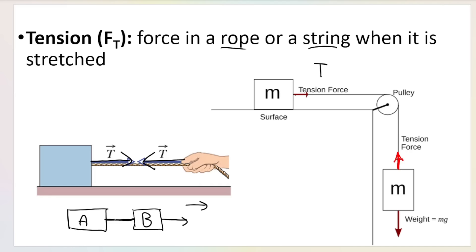When we have a rope connecting two objects, consider object A and object B connected by a string. There's a tension force pulling A to the right and a tension force pulling B to the left. Someone is pulling the rope to the right — that rope is what's causing A to move right, so tension for A goes to the right. But the tension force for B is actually pulling B slightly to the left — because it's attached to A, the tension is tugging it in the opposite direction, in the same direction as the frictional force. This is very important for free body diagrams and calculations later.